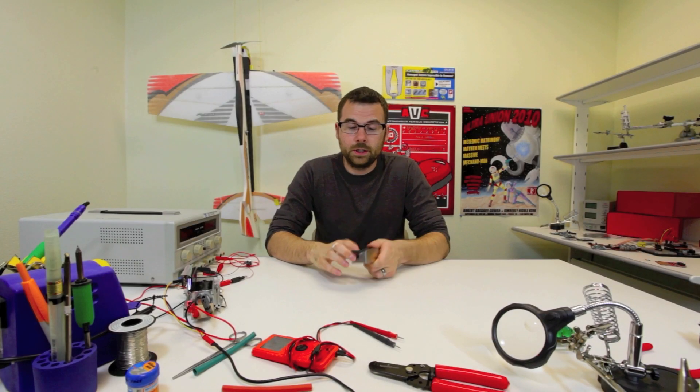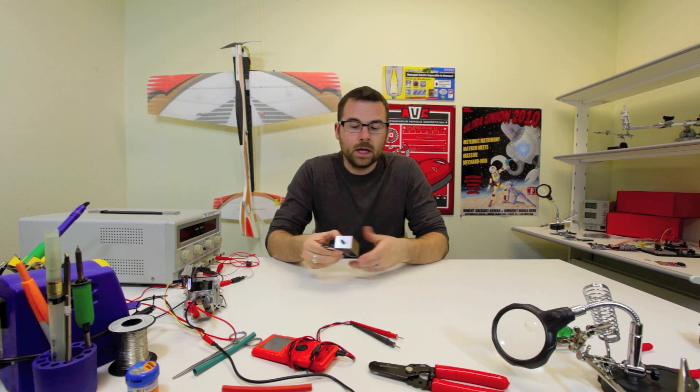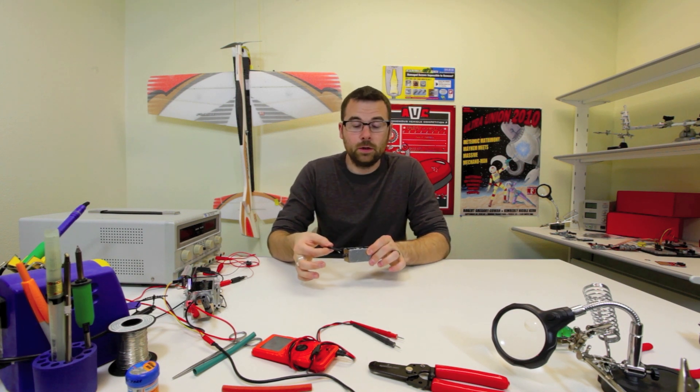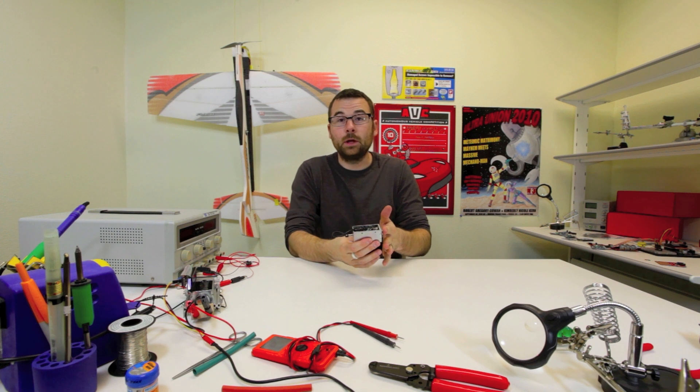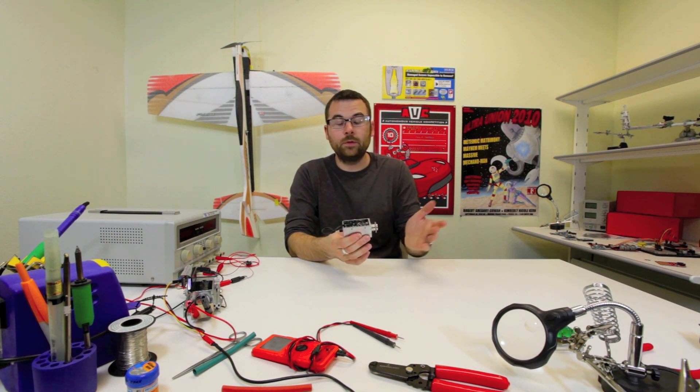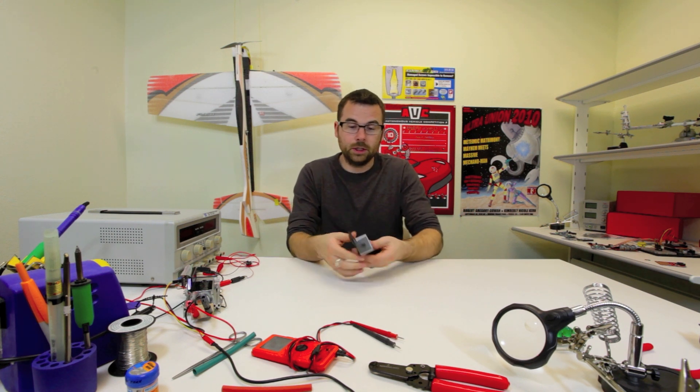Here we've got a heavy-duty solenoid. A solenoid is basically a motorized plunger. What you do is you hook this up to a voltage, apply voltage, and the plunger will spit out like that, and then with the spring, return back to the normal position.